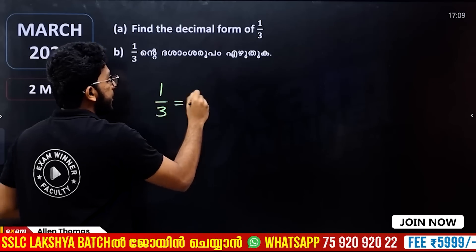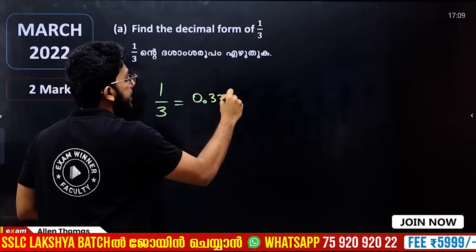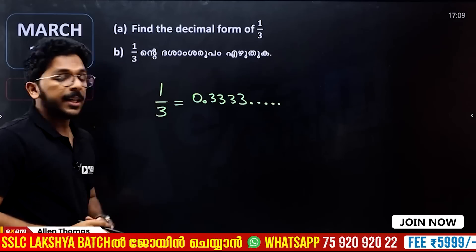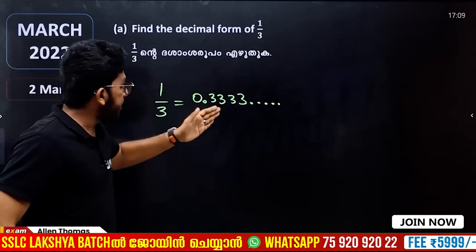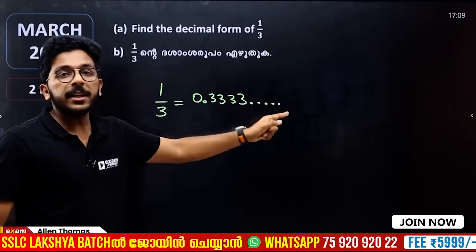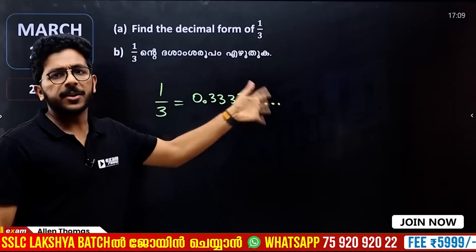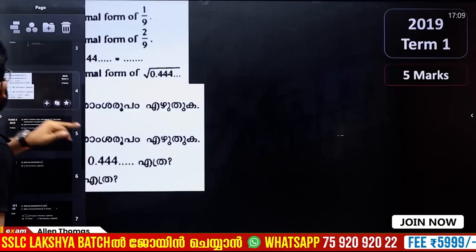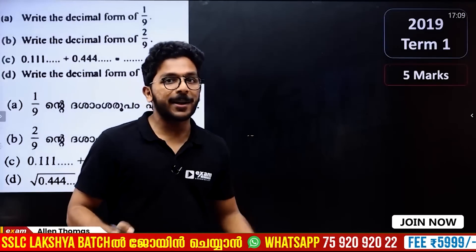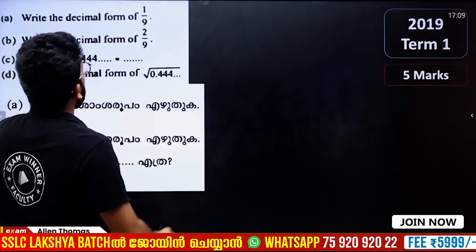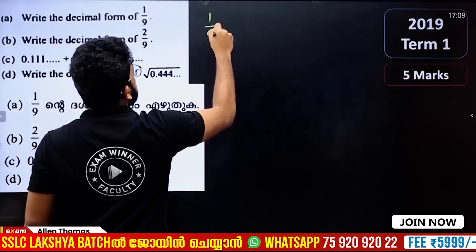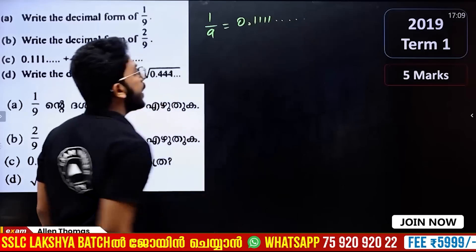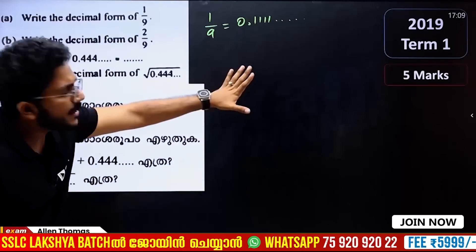1 by 3 is equal to 0.3333... We have to write the decimal form of 0.3333... There is a question about 0.3333 — that is the decimal representation of 1 by 3.